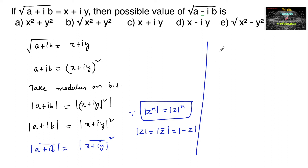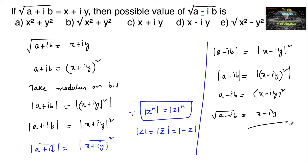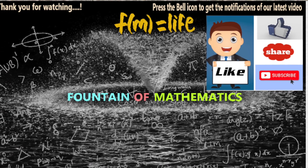The conjugate of (a + ib) is (a - ib), which equals modulus of (x - iy) whole square. So square root of (a - ib) equals x - iy. We simply change the sign, so √(a - ib) = x - iy, which is our fourth option. Please like, share, subscribe and support us. Thank you.